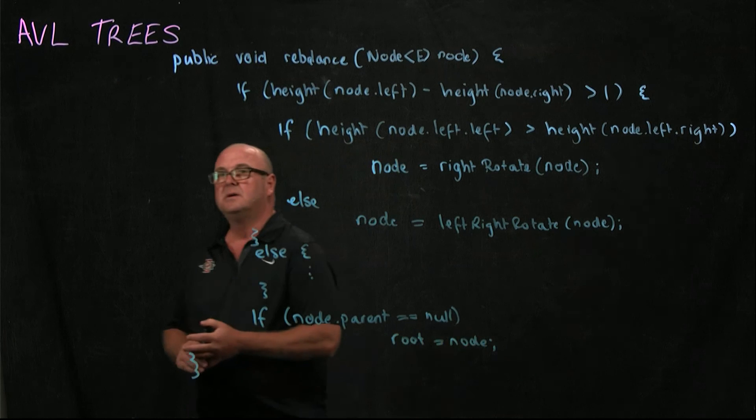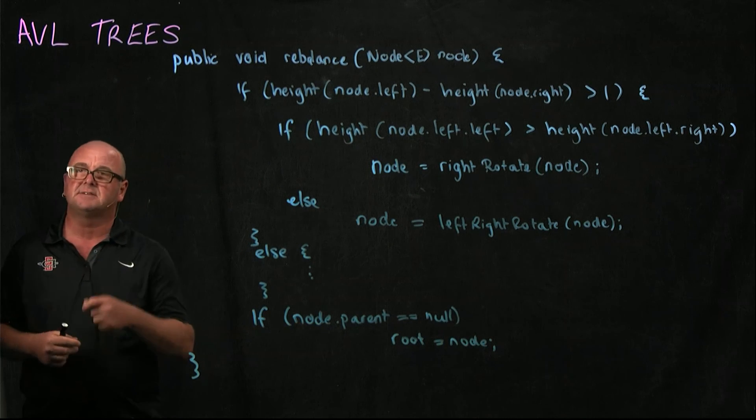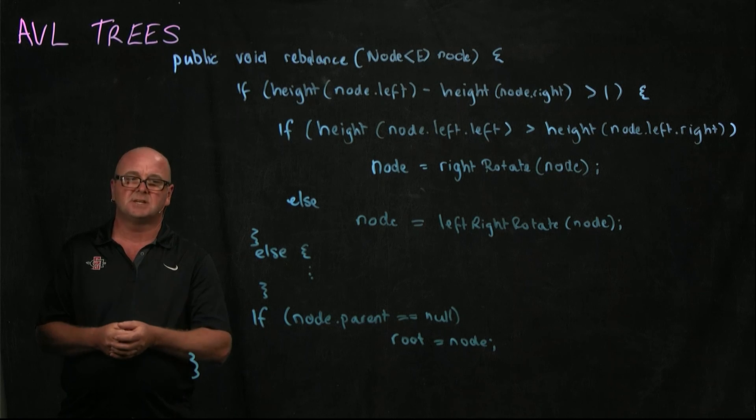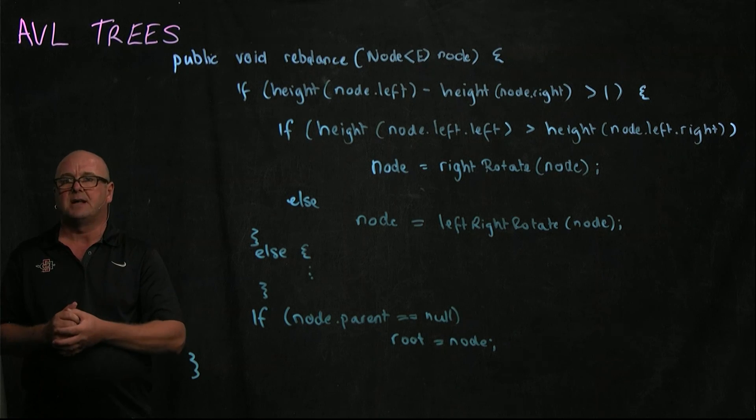So we've seen how, for an AVL tree, how to create a node object, how to add something to the node object, and here how to balance the tree.